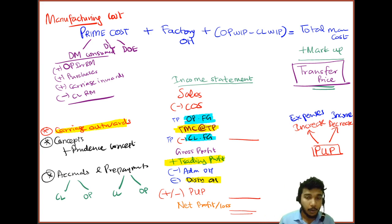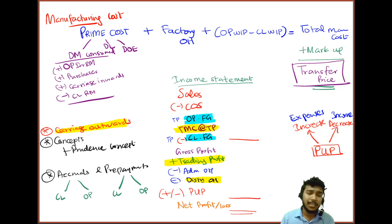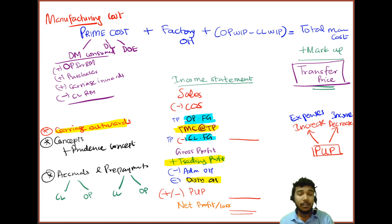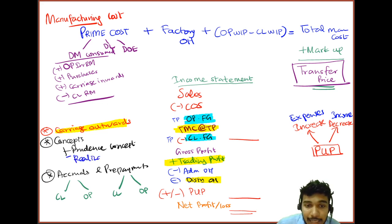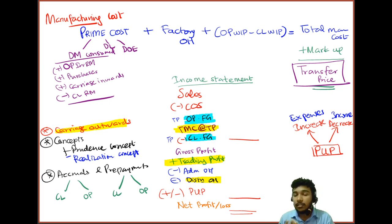The closing provision for unrealized profits amount is deducted from the finished goods amount inside current assets on the balance sheet. Two key concepts are related to provision for unrealized profits: the prudence concept, which says not to be over-optimistic — only record what you have earned, and record any foreseen losses immediately — and the realization concept, which says you can only realize profit after you have sold goods to an outside customer. These two concepts together encourage us to adjust for the provision for unrealized profits.